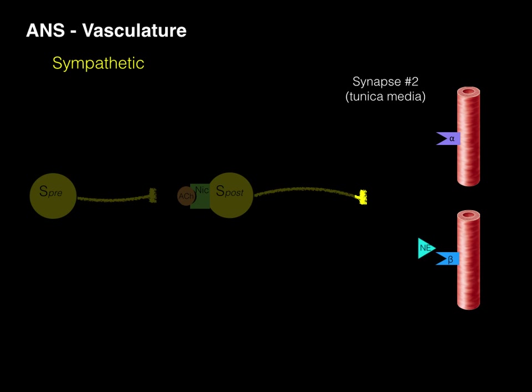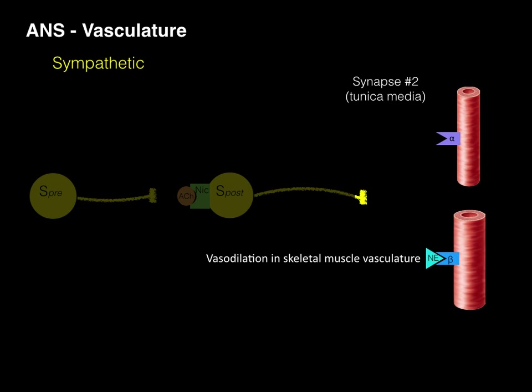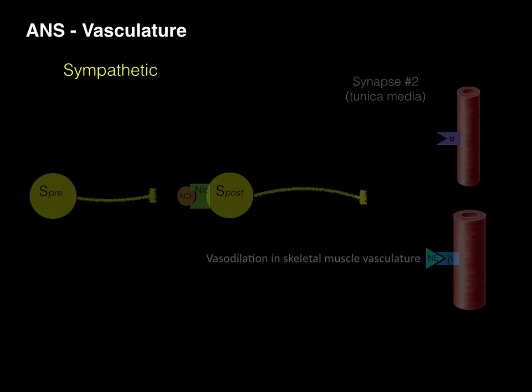Norepinephrine is also going to bind to beta-adrenergic receptors in skeletal muscle, which will cause vasodilation. So we see that norepinephrine binds to two different types of adrenergic receptors: alpha, which causes vasoconstriction, and beta, which causes vasodilation — specifically in skeletal muscle tissue.